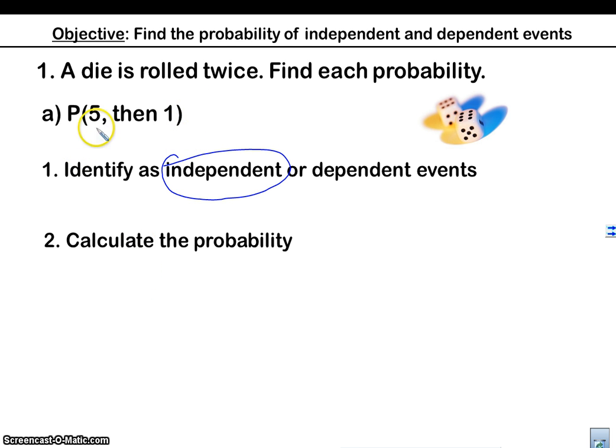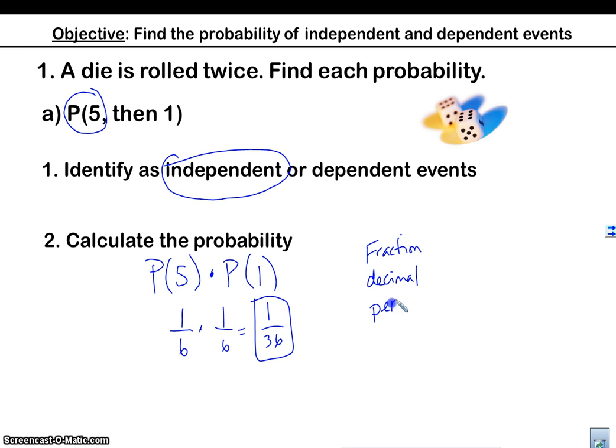So what's the probability? The probability is going to be my first probability, the probability of getting a five, times the probability of getting a one. So what's the probability of getting a five? One sixth. What's the probability of getting a one? One sixth. What's that probability? One thirty-sixth. That's it. And I know some of you are like, oh my God, fractions again. But listen, fractions are nice for probabilities. They're easy to work with because multiplication for fractions is not bad.